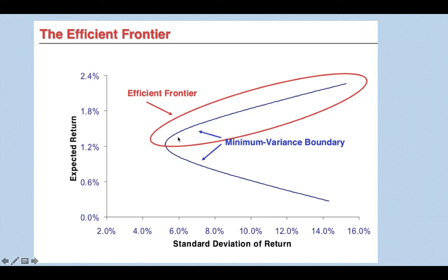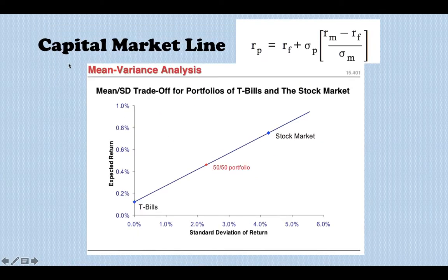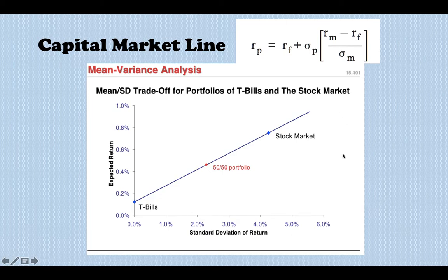It's very important to figure out the proportion you want to hold to get the best return and lower risk. That's why we look at the capital market line. The formula for the capital market line shows that if I hold a stock portfolio like the S&P, combined with a risk-free asset like T-bills, I get a straight line. Mixing a risky portfolio with a risk-free asset produces this straight line called the capital market line.